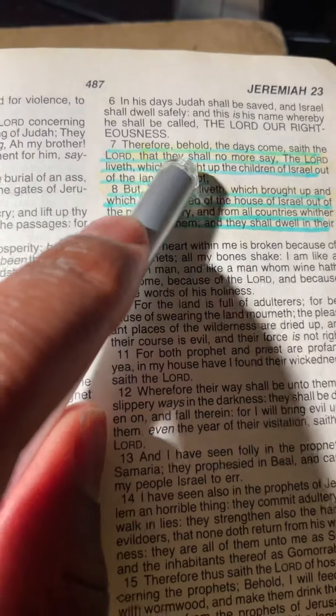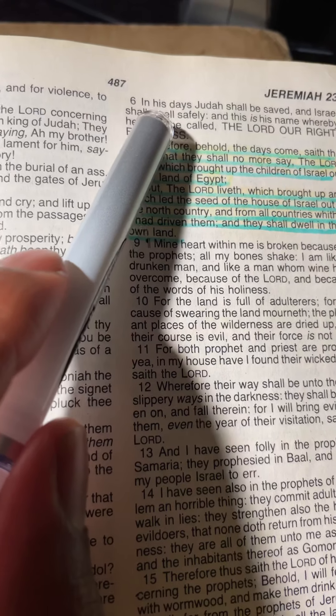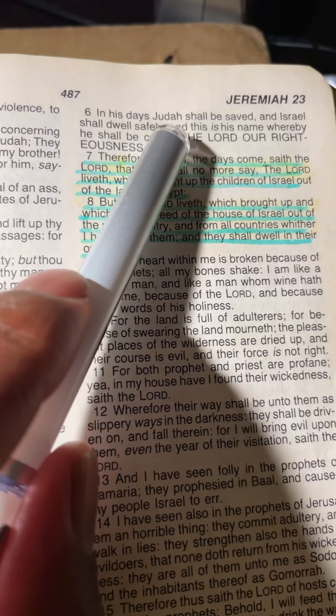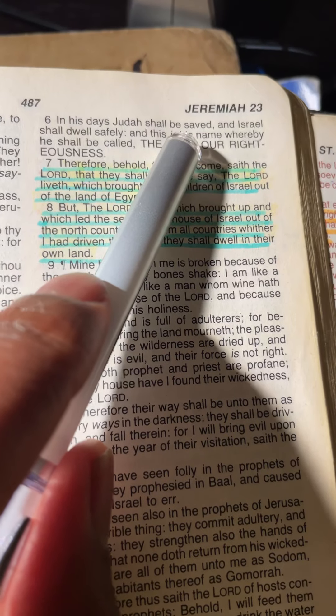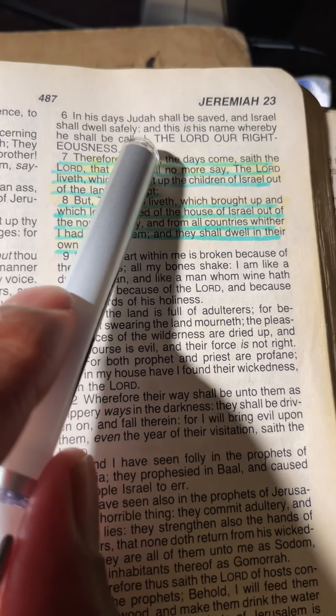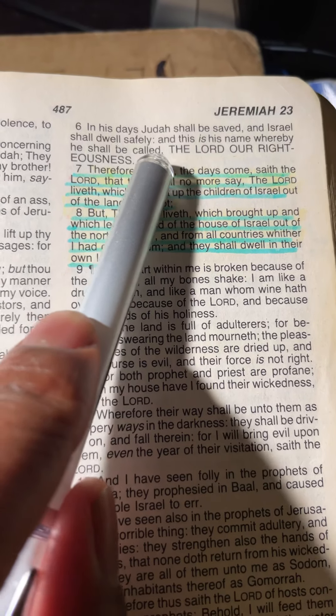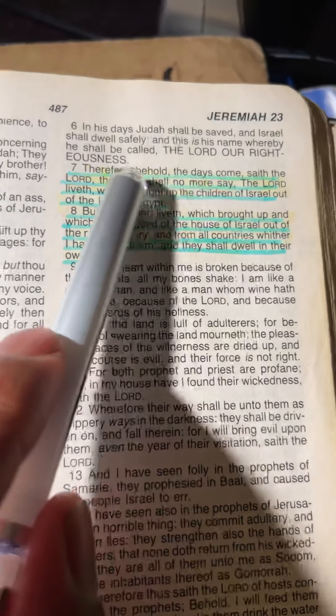Now, verse 6 is what we'll be breaking down in Hebrew in this lesson. Verse 6: In his days Judah shall be saved, and Israel shall dwell safely, and this is his name whereby he shall be called the Lord our righteousness.